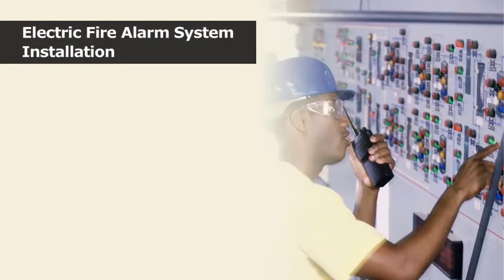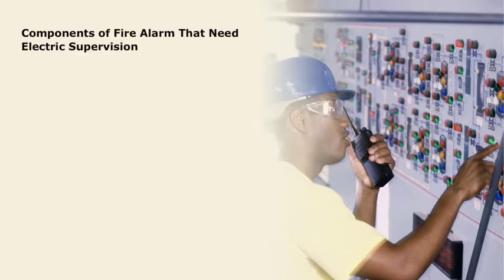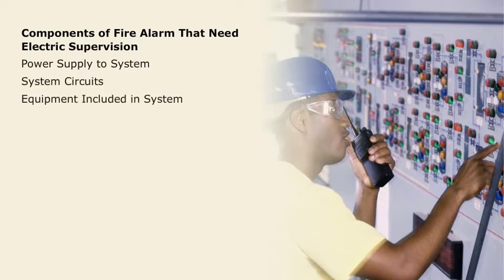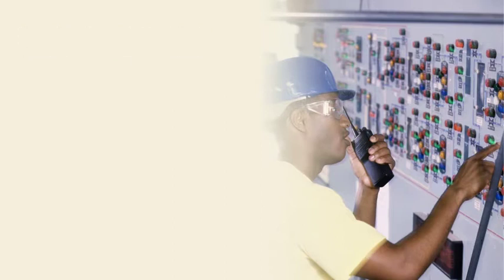The electric supervision of fire alarm systems is critical to the system operation, ensuring smooth and uninterrupted operation. Components that can be supervised include the power supply to the system, system circuits, and equipment included in the system. In this way, open circuits and ground fault conditions will activate a trouble signal.